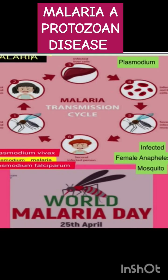The infection is caused due to the bite of an infected female Anopheles mosquito to a healthy person. Here, see the transmission cycle of malaria — from that you will get an idea about how this infected female mosquito causes infection in human beings and completes its life cycle within two hosts: the human host and the mosquito host.